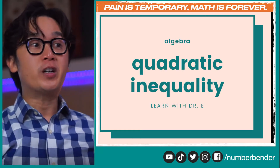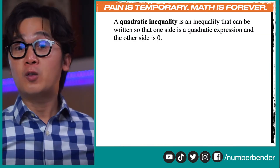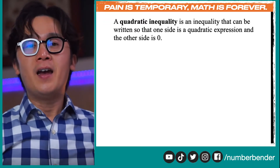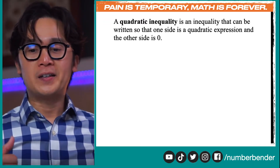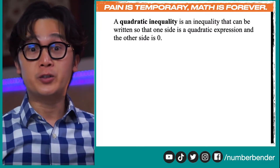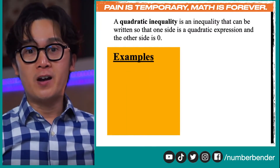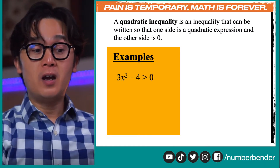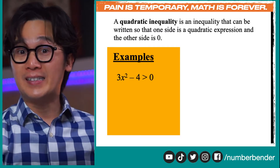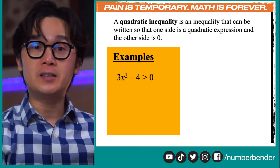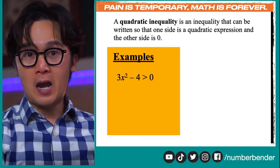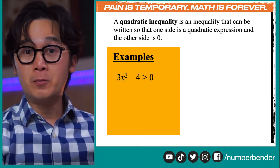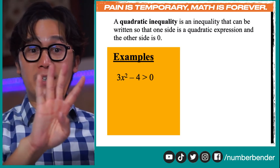But first, you need to understand and remember what quadratic inequalities are. Quadratic inequalities, just like quadratic equations, are inequalities with the highest exponent of 2. For example, 3x squared minus 4 greater than 0 is a quadratic inequality because the highest exponent is 2, and we are using the greater than symbol.